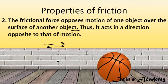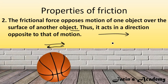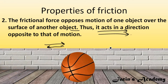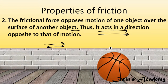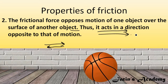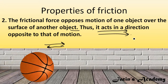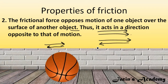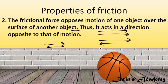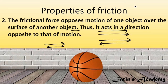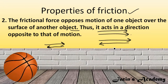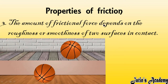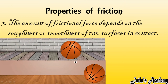If a ball is moving in one direction, frictional force always acts in the opposite direction — that is how it slows down the motion. If force were applied in the same direction as motion, the object would speed up, not slow down. So friction opposes motion by acting in the opposite direction.